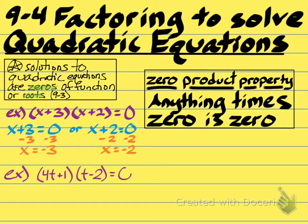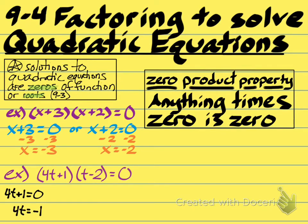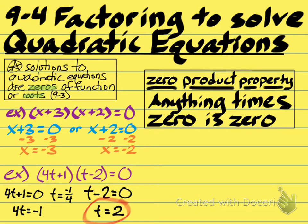Here's another example — feel free to pause the video and see if you get it. The first thing you would want to do is set 4t plus 1 equal to zero. These are binomials that are multiplying together, so anything times zero is zero. You would subtract 1 from both sides to get negative 1, then divide both sides by 4 to get t alone. Negative 1 divided by 4 is negative one-fourth — that's one answer. You can absolutely get fractions. Then t minus 2 set equal to zero: just add 2 to both sides, giving t equals 2. Both of those are the solutions to this quadratic equation.